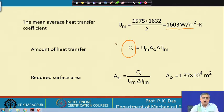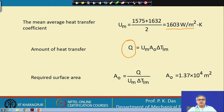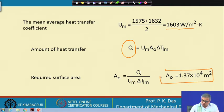Now we know Q, we know the average heat transfer coefficient, and we know the log mean temperature difference. The only unknown is A_o — the outside tube area — since the average heat transfer coefficient was calculated based on the outside area of the tubes. From Q = U_avg × A_o × LMTD, we can calculate A_o.